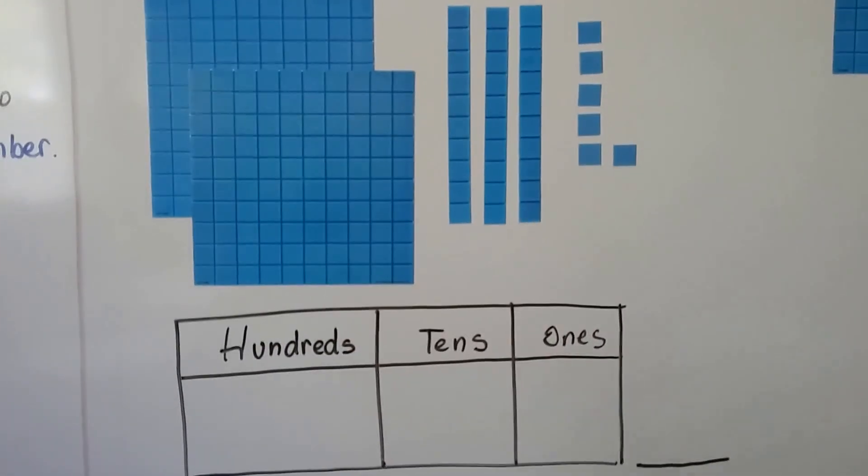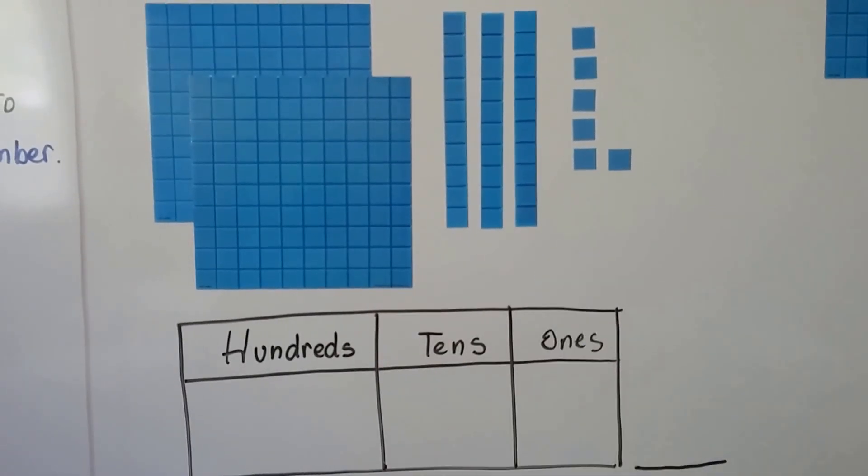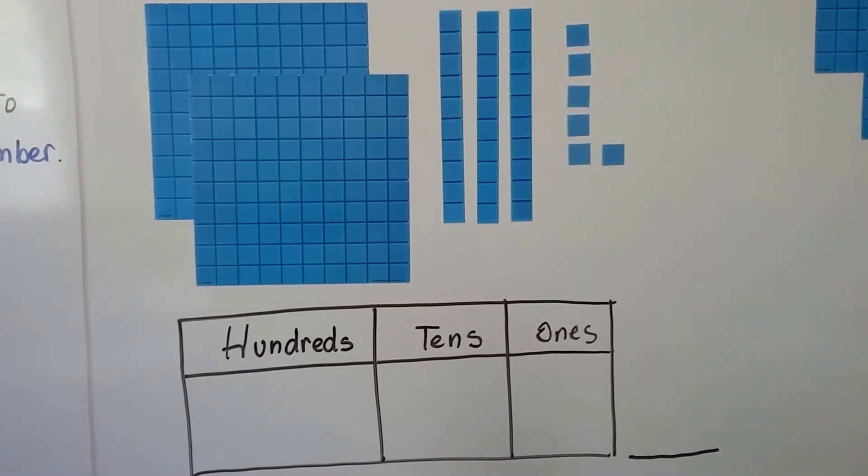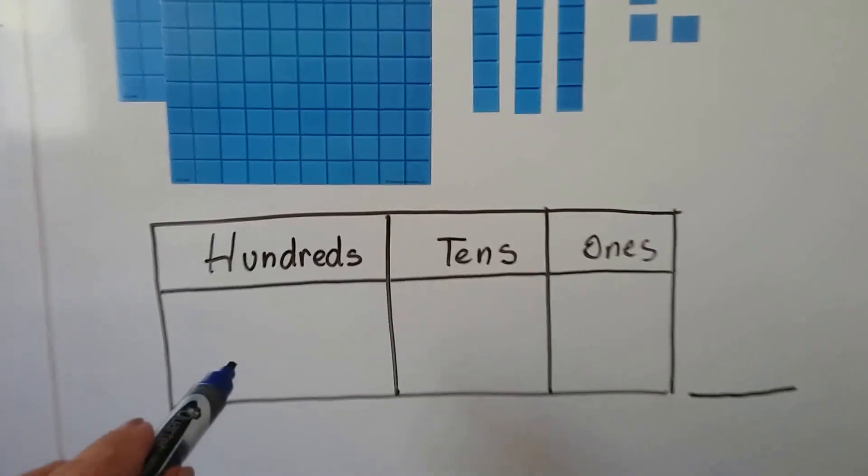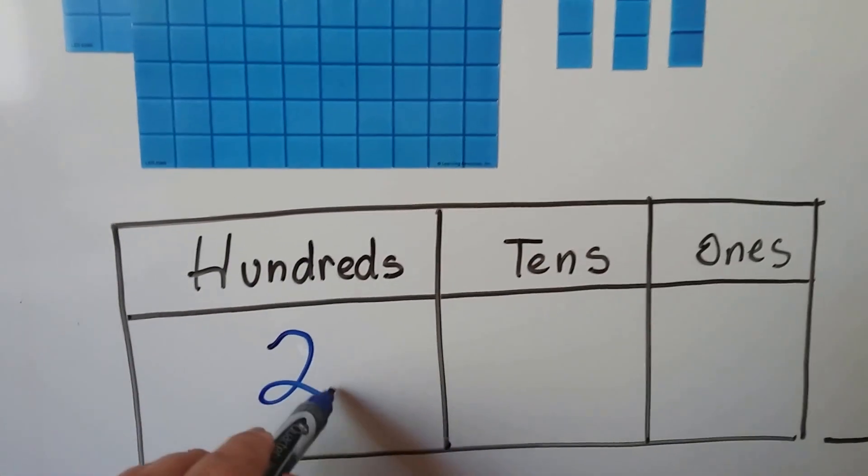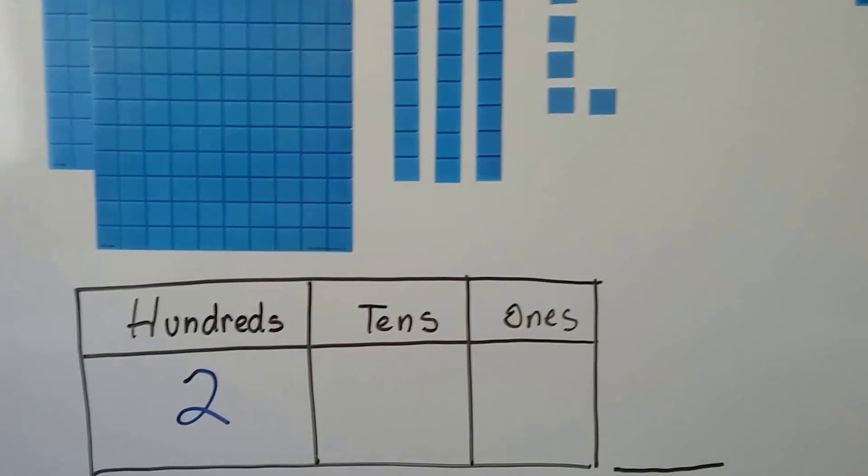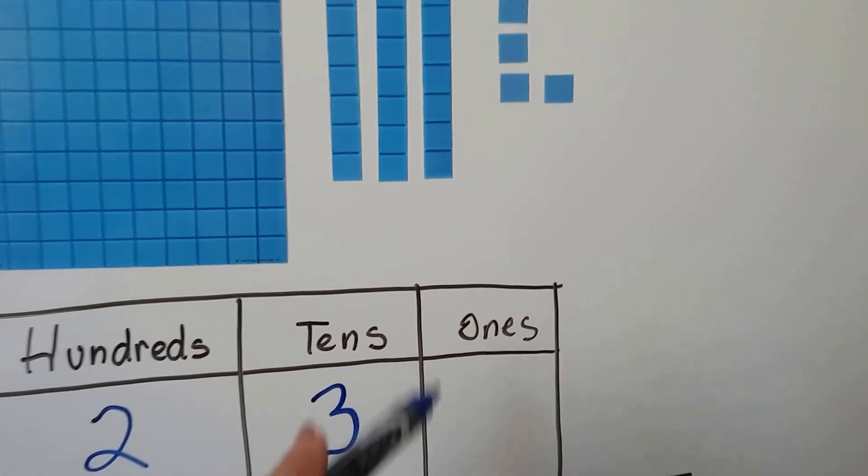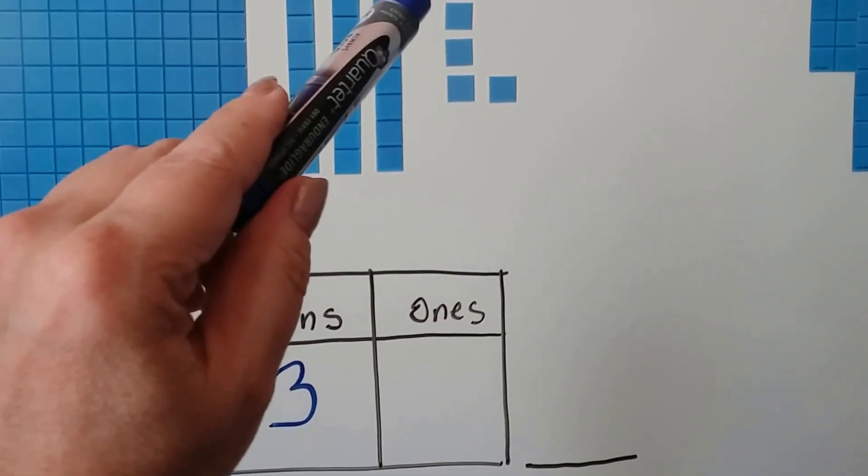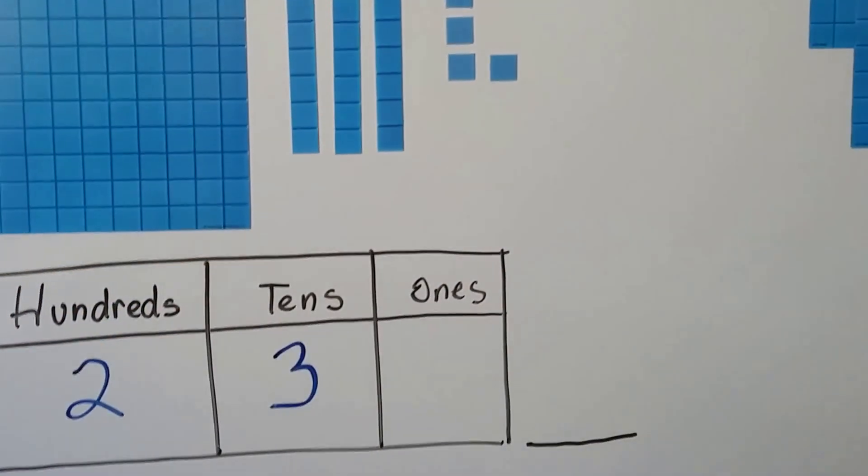The skinny ones are tens and these are ones. We can count the hundreds: one hundred, two hundred. So we have two hundreds, we have one, two, three tens, and we have one, two, three, four, five, six ones.